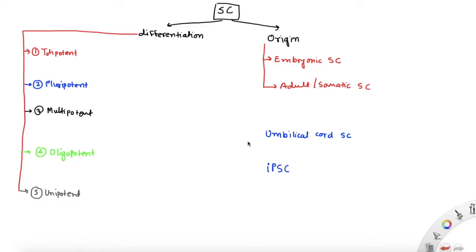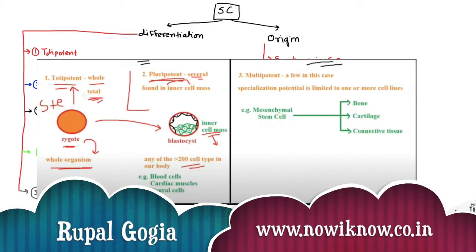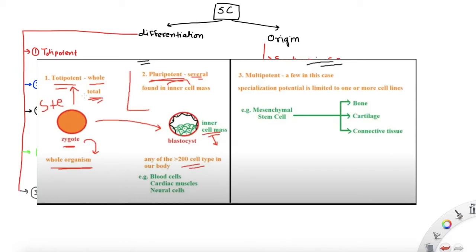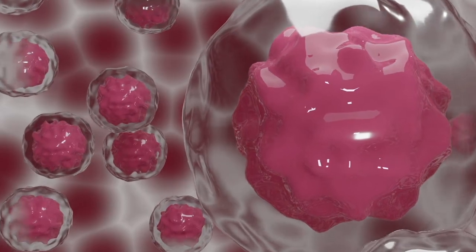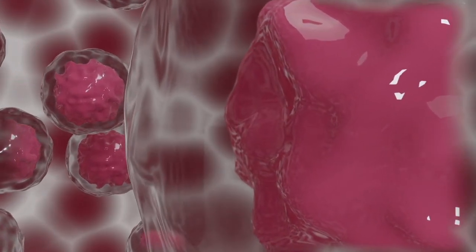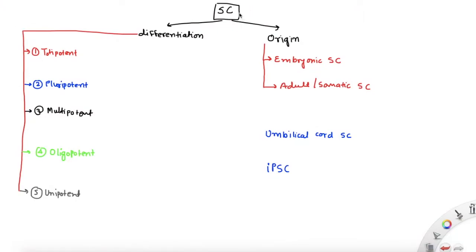Hello everyone, welcome back. Today's video is an updated version of an older video on stem cell potency. There are a lot more terms when it comes to stem cells, and in this video I've tried to address all of them. When it comes to stem cells, we can classify them in two ways: based on their ability to differentiate, or based on their origin — the source from where they have been derived.